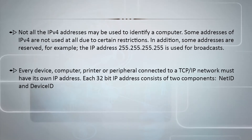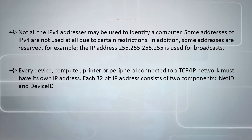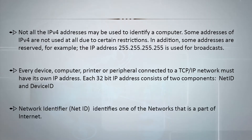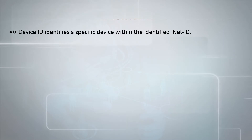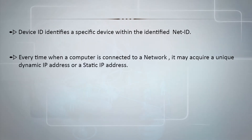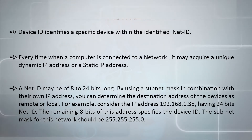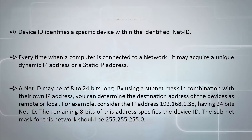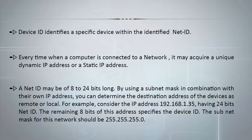Every device — computer, printer, or peripheral — connected to a TCP/IP network must have its own IP address. Each 32-bit IP address consists of two components: NetID (Network Identifier) and DeviceID. NetID identifies one of the networks that is part of the internet, while DeviceID identifies a specific device within that network. Every time a computer connects to a network, it may acquire a unique dynamic IP address or a static IP address. A NetID may be 8 to 24 bits long. Consider the IP address 192.168.1.35 with a 24-bit NetID; the remaining 8 bits specify the DeviceID.